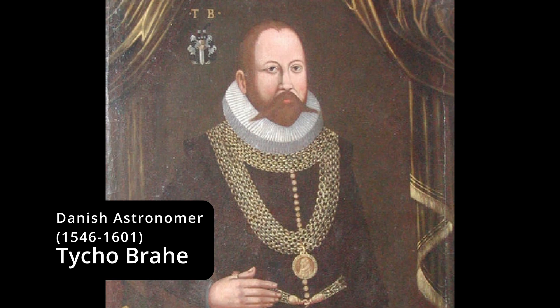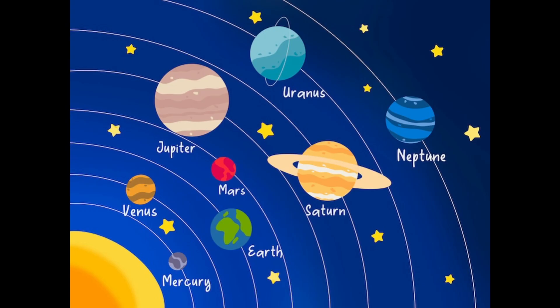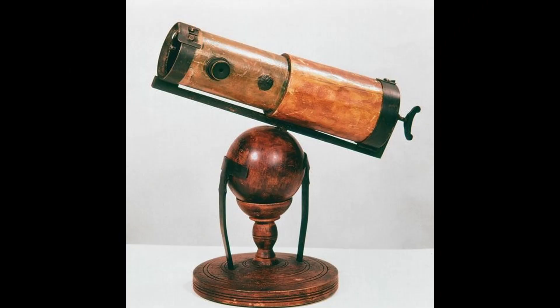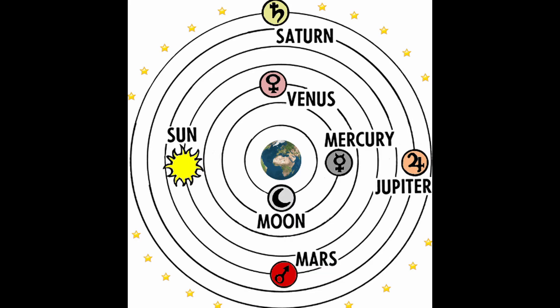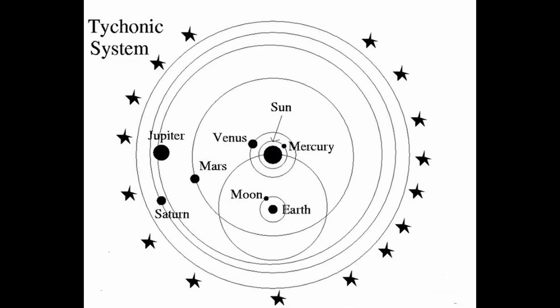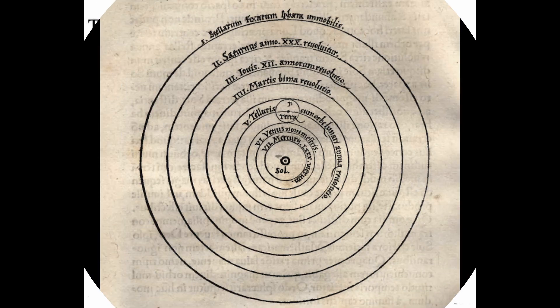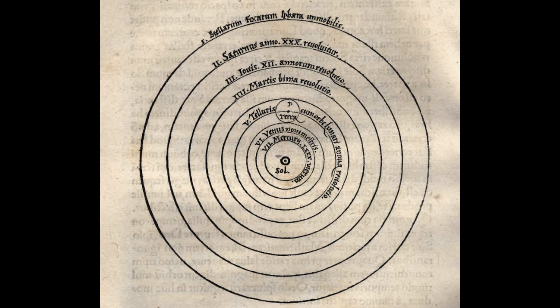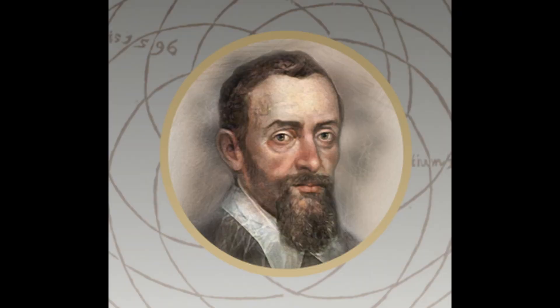Although Tychoism would eventually give way to full heliocentrism by the late 17th century, it played a crucial role in the progression of astronomical science. By proposing a compromise that bridged the gap between traditional geocentrism and the revolutionary heliocentric model, Tycho Brahe facilitated further inquiry into the mechanics of the cosmos. His observations laid the groundwork for future breakthroughs by astronomers like Johannes Kepler and Isaac Newton.